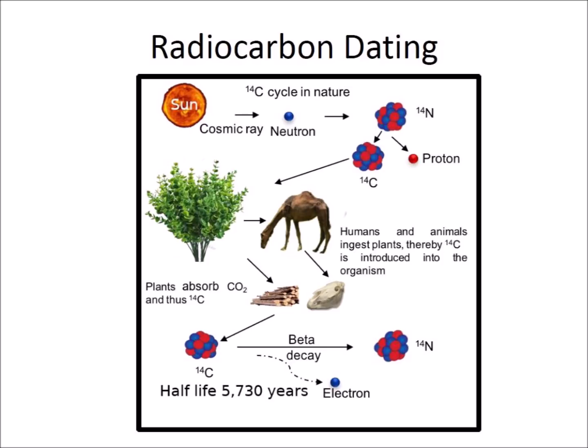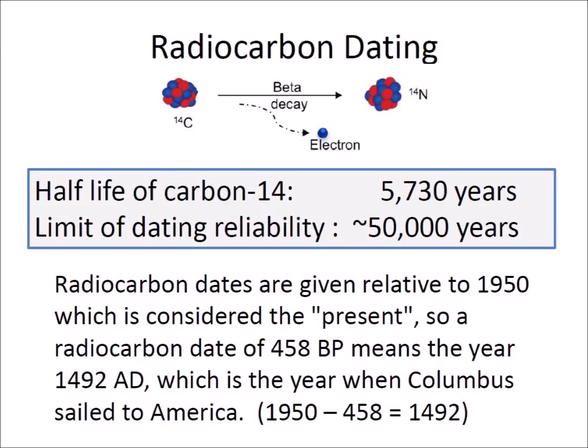The older a sample is, the less carbon-14 there is to be detected. Radiocarbon dating can only be used for dating organic materials and can provide date ranges of up to 50,000 years. Radiocarbon dates are always given relative to 1950, which is considered the present. So a radiocarbon date of 458 before the present means the year 1492 AD, which is the year when Columbus sailed to America. The convention to use 1950 as a reference date makes it possible to compare radiocarbon dates published in journals without having to adjust for the date of publication of the journal.